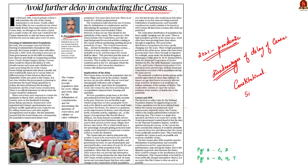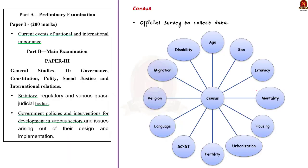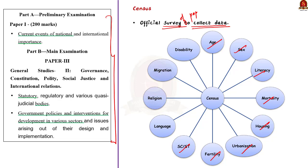First, let us see what is a census. The census exercise involves the official survey of population to collect details like age, sex, literacy, mortality, housing, urbanization, fertility, scheduled caste, scheduled tribe, language, religion, migration, disability, and many other socio-cultural and demographic data. The data collected through census is compiled and analyzed for various activities of the government.